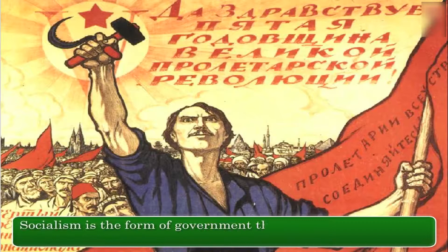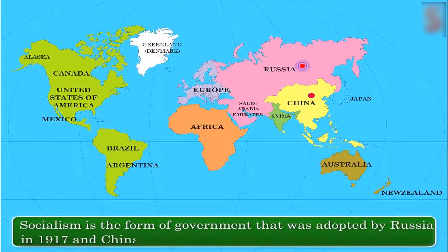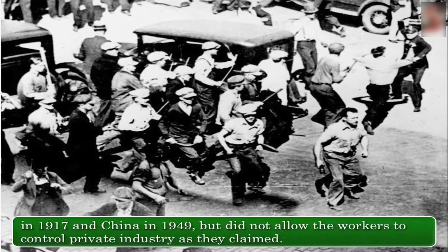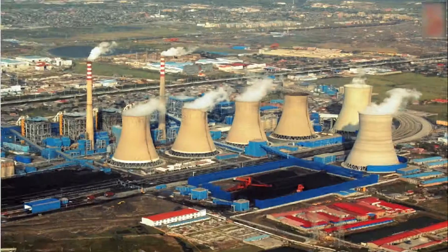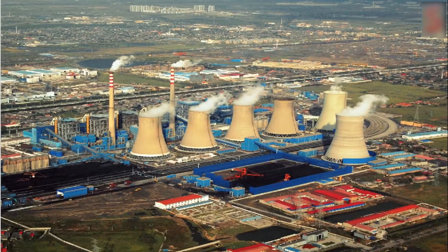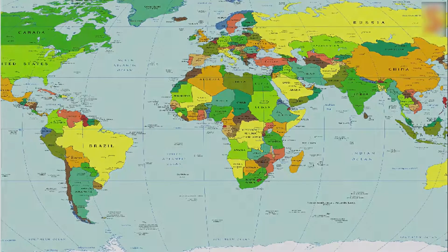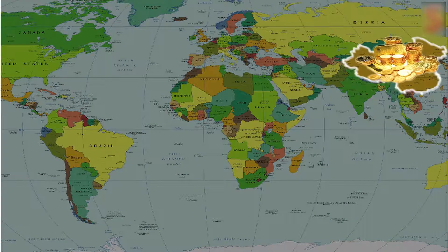Socialism is the form of government that was adopted by Russia in 1917 and China in 1949, but did not allow the workers to control private industry as they claimed. The government itself controlled all private enterprises and controlled the economy. Recently, the Chinese economy has become more geared towards capitalism but is still officially socialist.